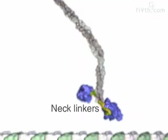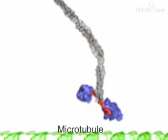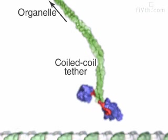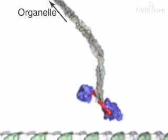In the cell, kinesins pull organelles along microtubule tracks. The organelle attaches to the other end of the long coiled coil that holds the two motor heads together. The organelle is not shown here.